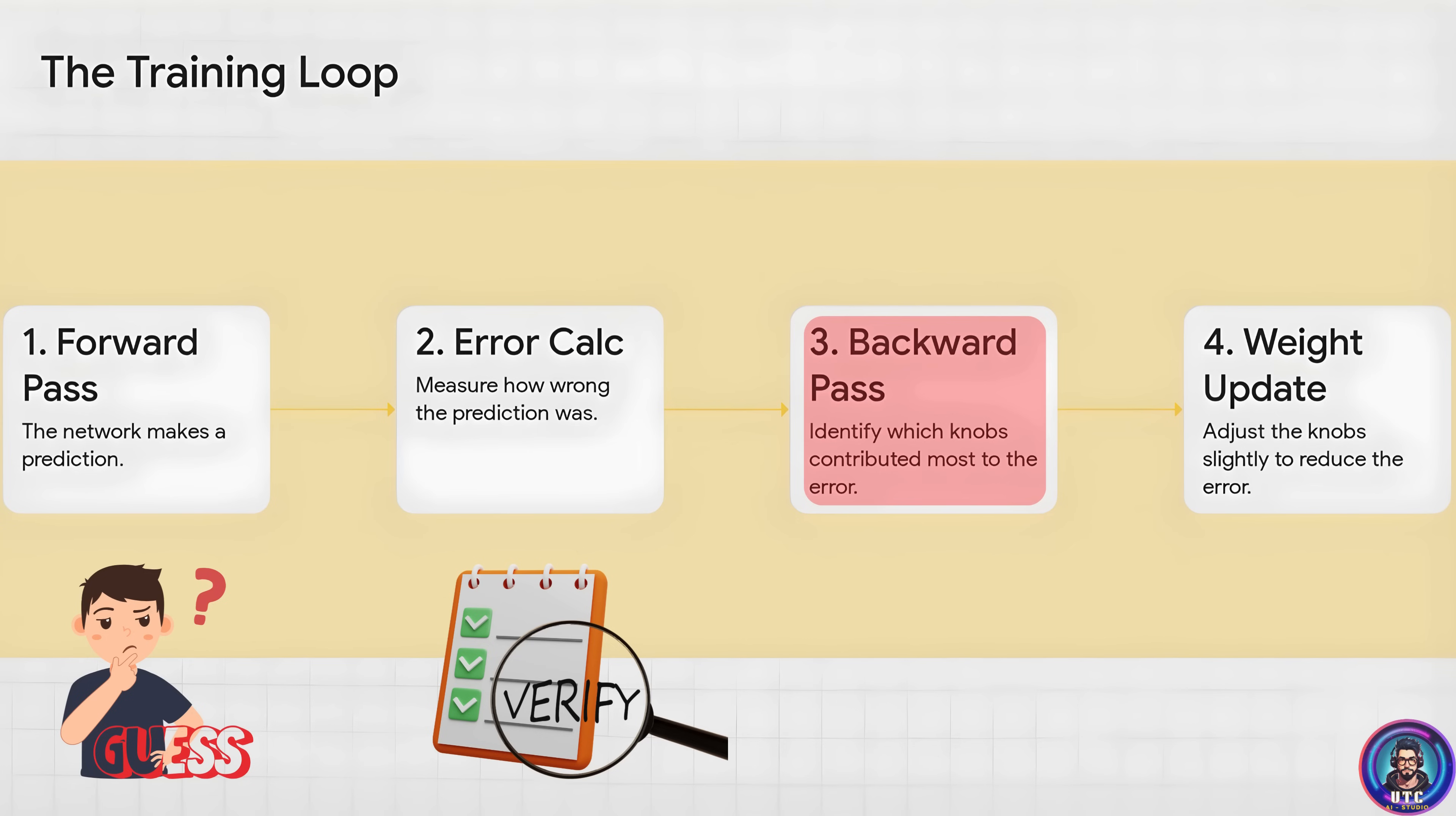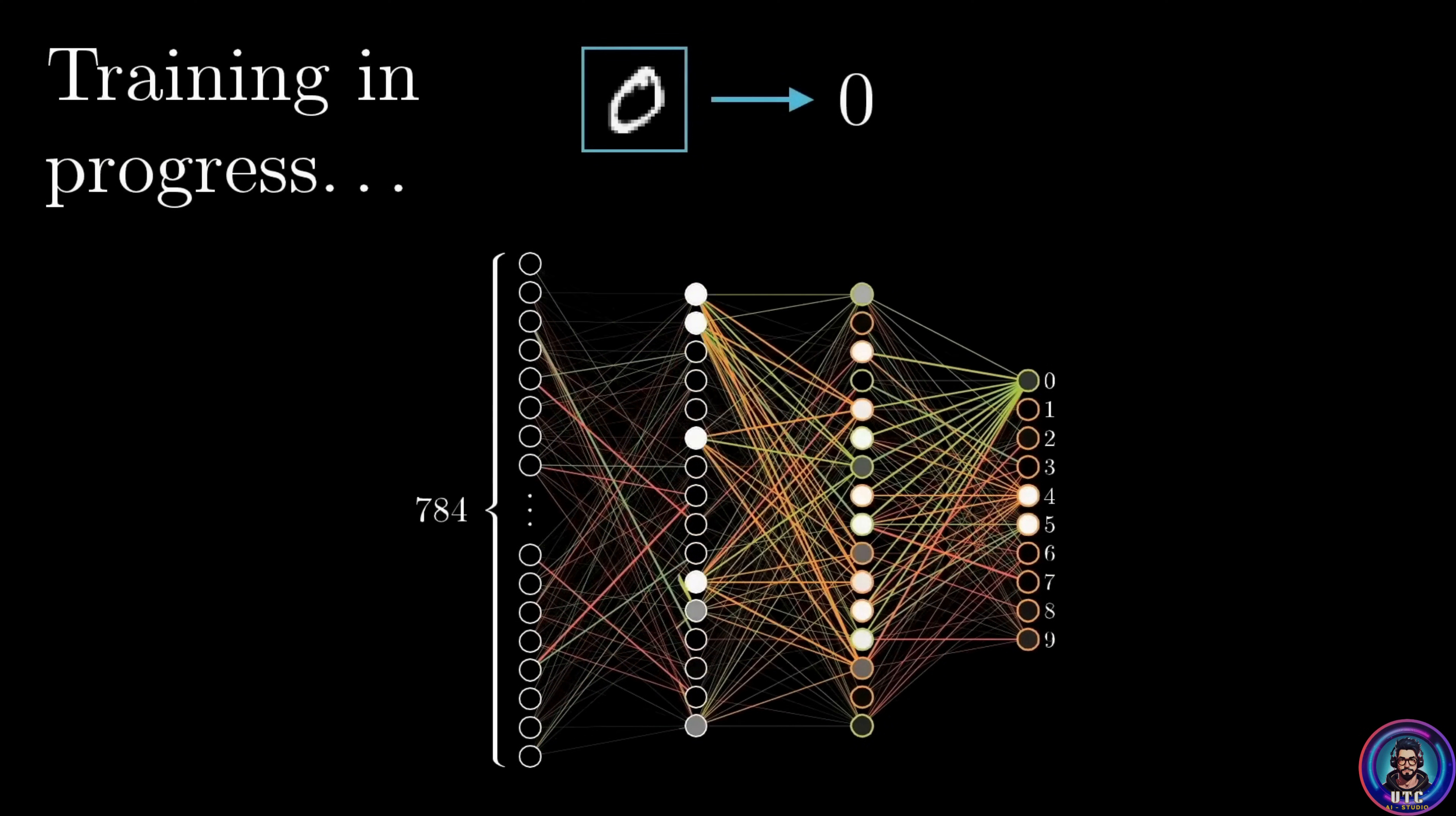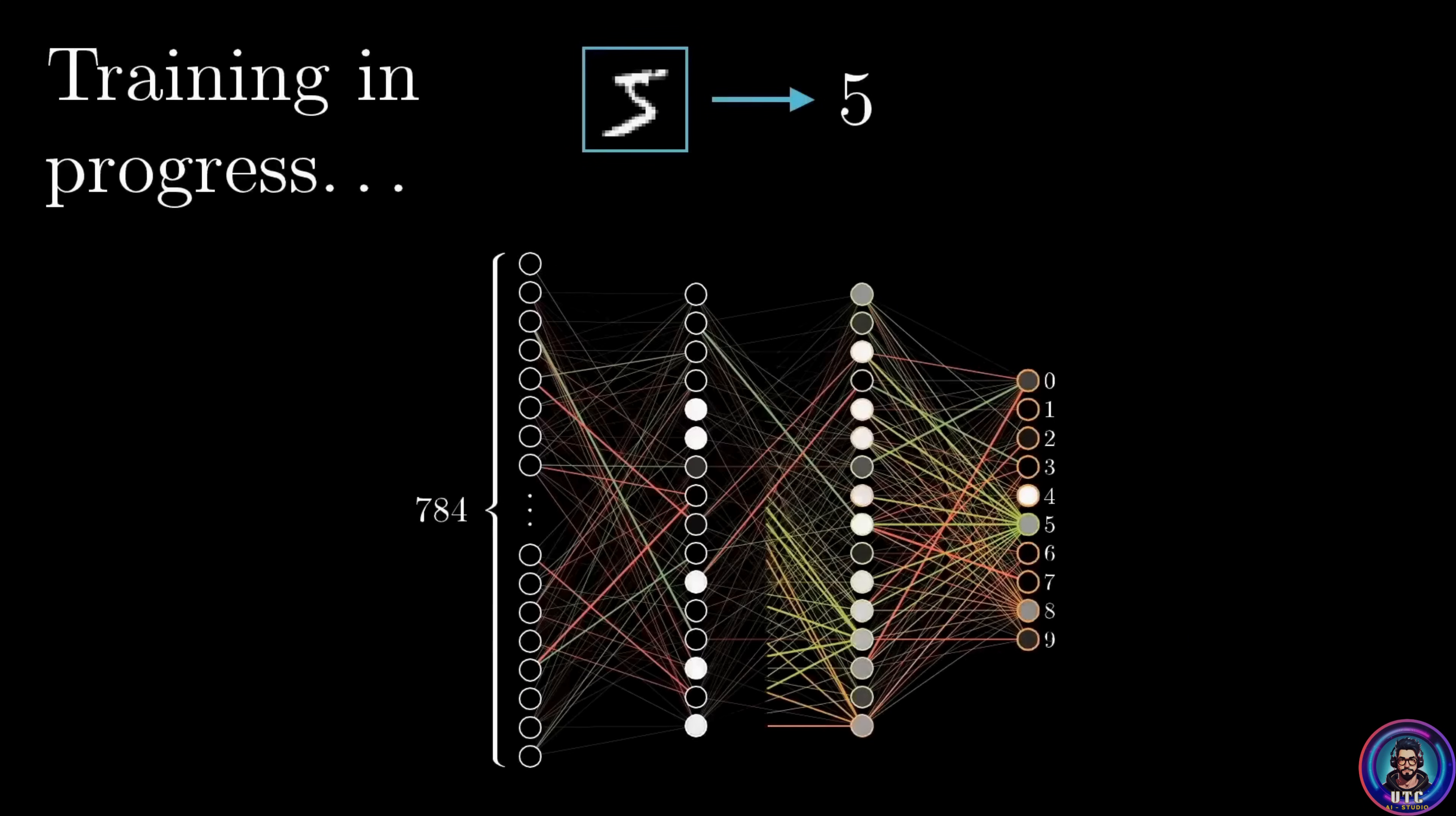Now the third step, this is the really clever part. It works backwards through the whole network to figure out which of those 13,000 knobs were the biggest culprits for the mistake. This is a famous process called backpropagation. And finally, the fourth step, it tweaks those specific knobs just a little bit, hoping to do better next time. And this loop just repeats over and over and over again across thousands of examples until all 13,000 knobs are tuned perfectly. And the network slowly but surely learns how to see.